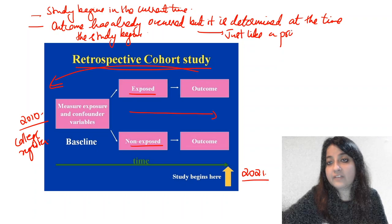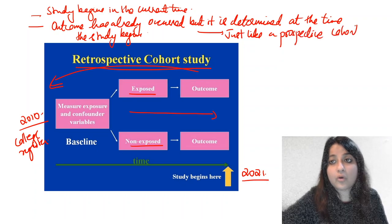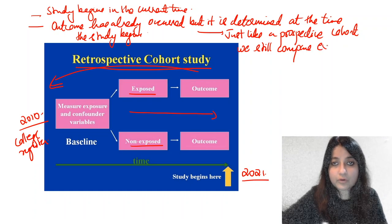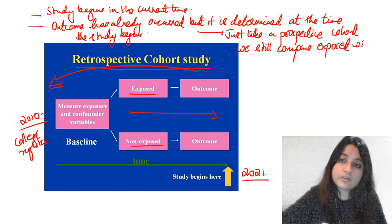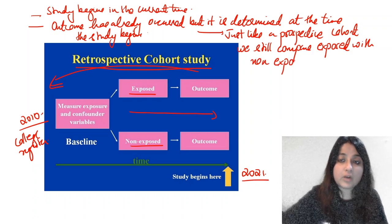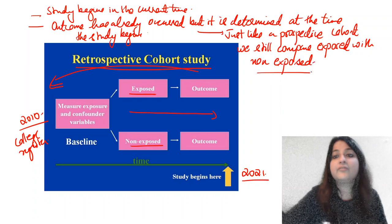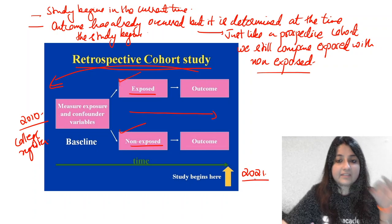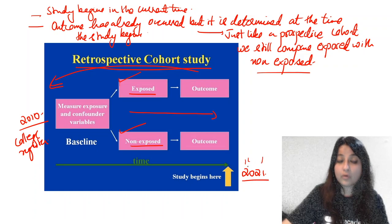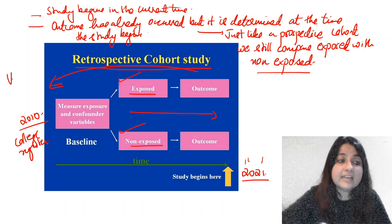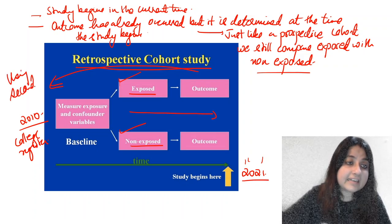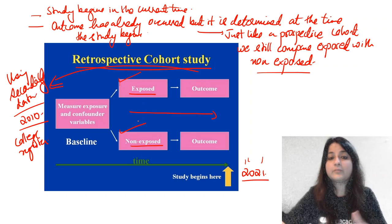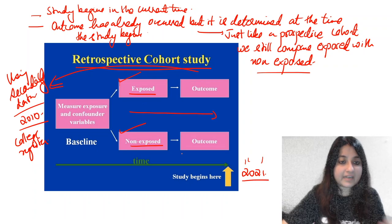Just like a prospective cohort, in a retrospective cohort we still compare exposed with non-exposed. Whether it's prospective or retrospective cohort, you are still comparing exposed with non-exposed. The study may have started at the present time, but you go back in time and divide your participants using secondary data — already collected data — into two groups: exposed and non-exposed. Then you determine the outcome at that same time.